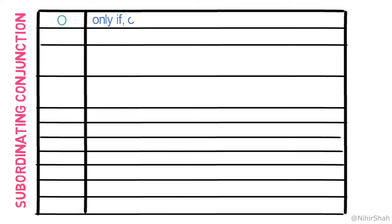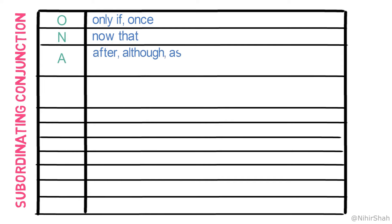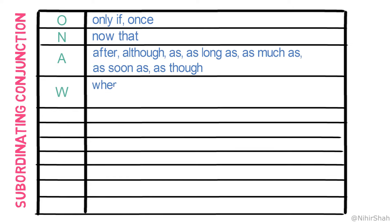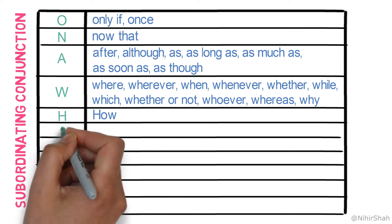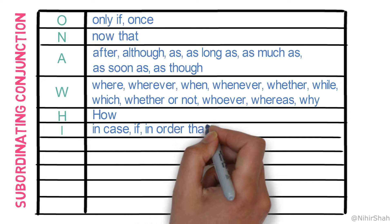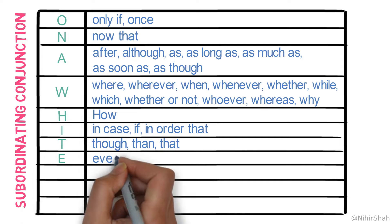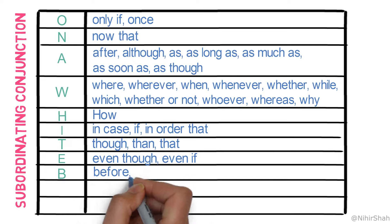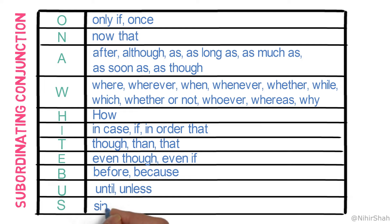O: only if, once. N: now that. A: after, although, as, as long as, as much as, as soon as, as though. W: where, wherever, when, whenever, whether, while, which, whether or not, whoever, whereas, why. H: how. I: in case, if, in order that. T: though, then, that. E: even though, even if. B: before, because. U: until, unless. S: since, so that.